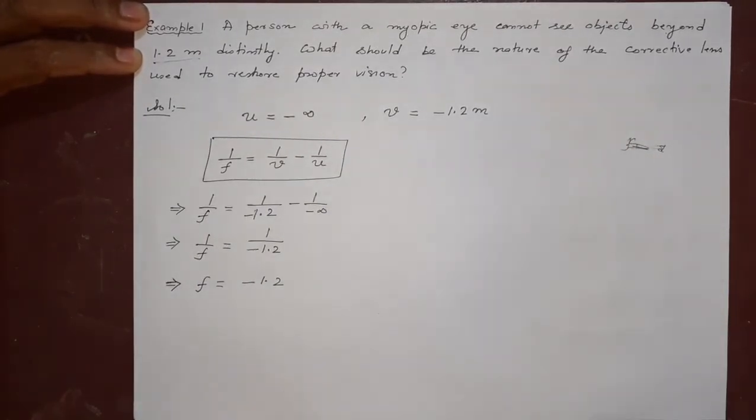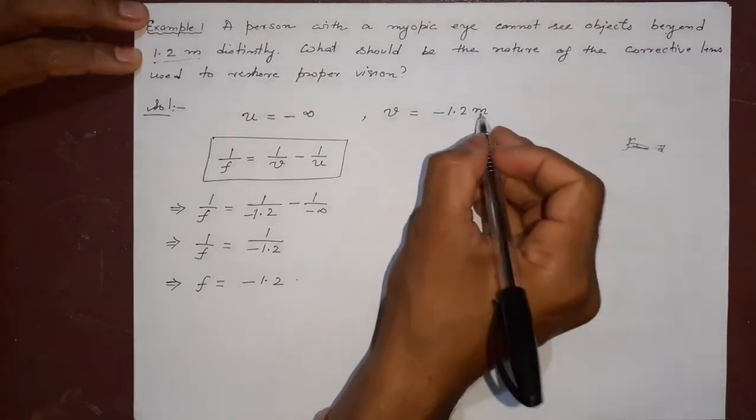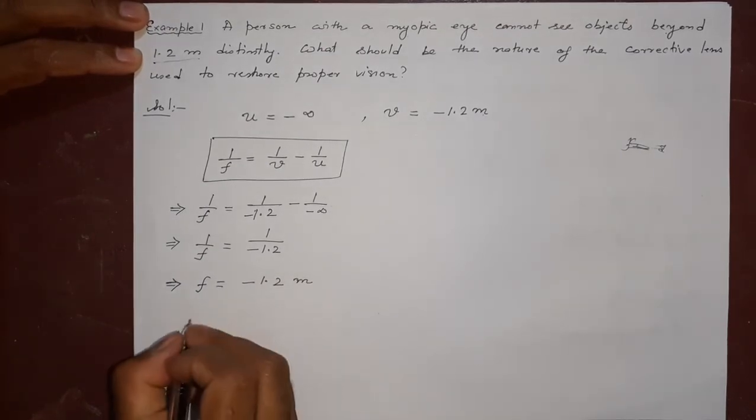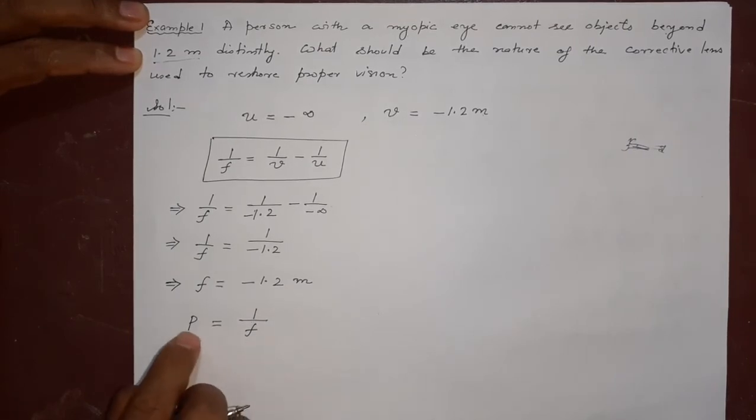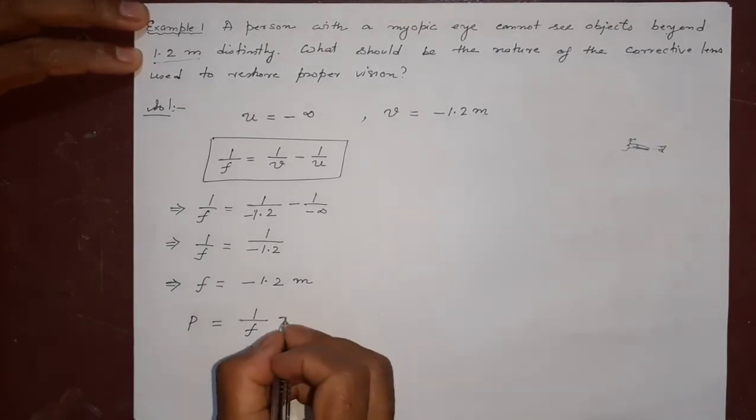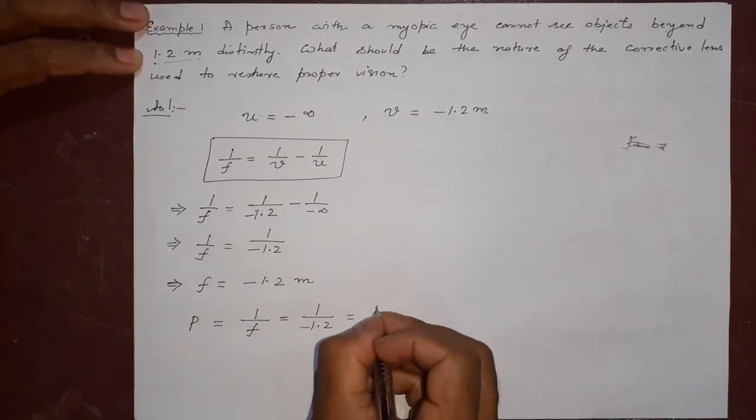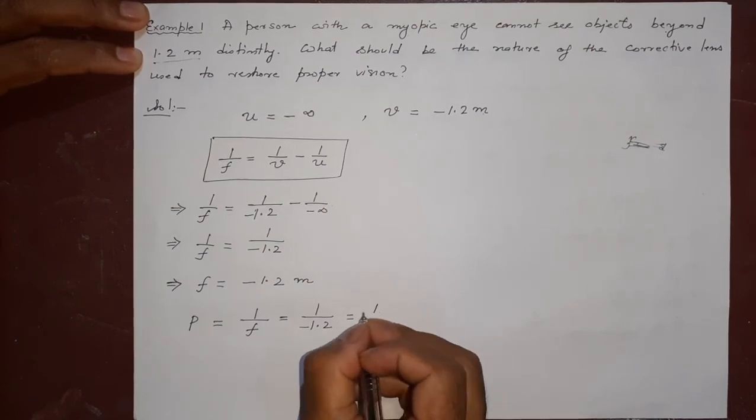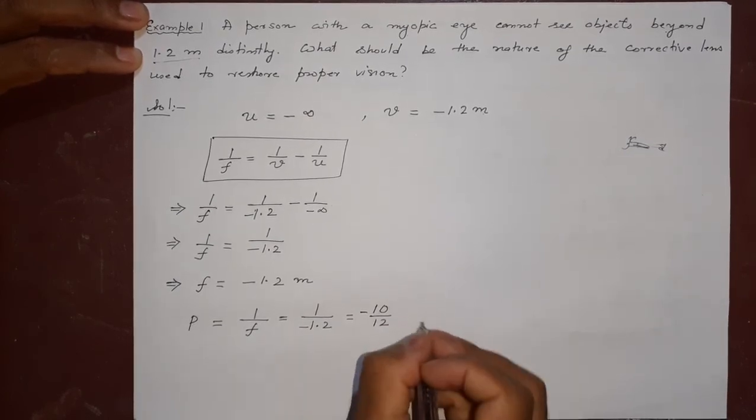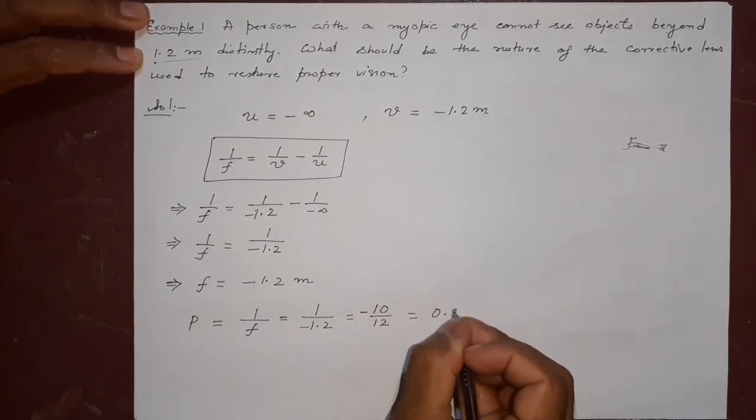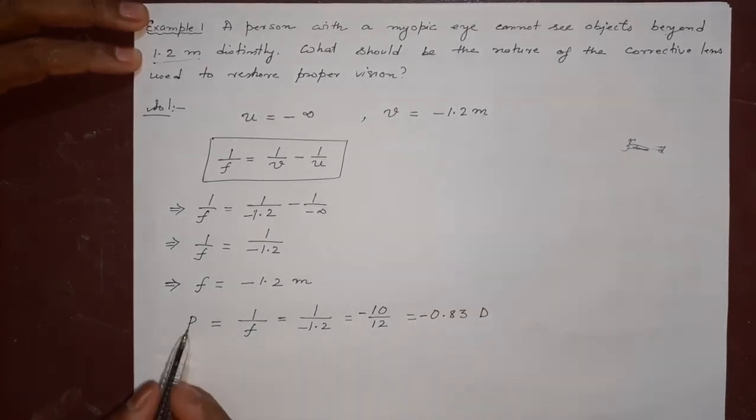What will be the power? Power is 1/f, already in meters, so no need to change. What is this? 1/(-1.2). I will write -10/12. If I divide this, I get -0.83 per meter. Per meter is otherwise called diopter.